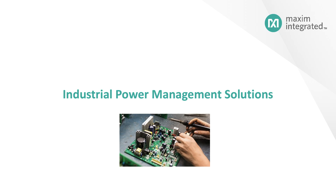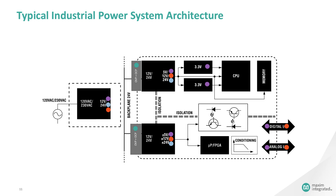Next is industrial power. Let's start with the general industrial power system architecture. Many industrial systems start with AC power in, which is then converted to a DC backplane of 24 volt or 12 volt. With this backplane bus, power is supplied to various IC components that may need 3.3 volts, 5 volts, 12 volts, or any other such voltage. Buck-boost converters and modules perform this power conversion at very high efficiencies. In many cases, the power has to be isolated using magnetic isolation to protect the downstream components.